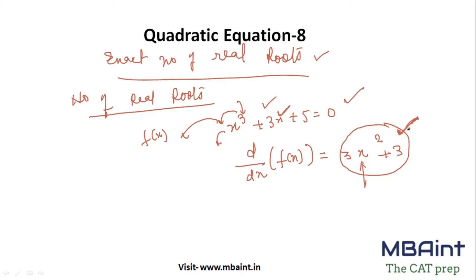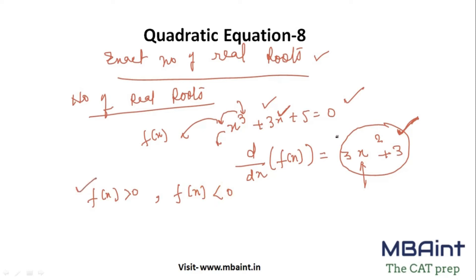Remember that whenever you differentiate a function and it is either greater than 0 or less than 0, in both cases you will have the exact number of real roots equal to 1. One more condition: the degree of the equation should be odd.